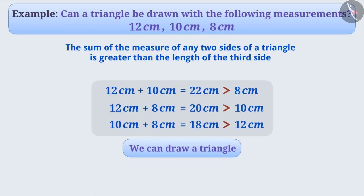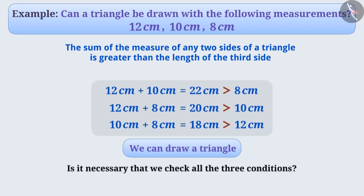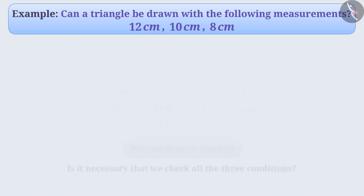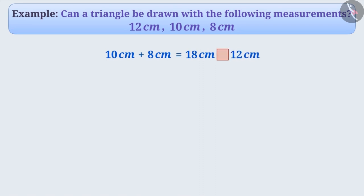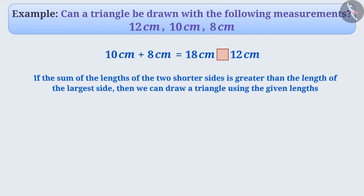Just think — to determine whether a triangle can or cannot be formed with the given lengths, is it necessary to check all three conditions? It's not necessary. If we add the lengths of the two shorter sides and compare it with the length of the largest side, we can find whether we will be able to form a triangle or not. If the sum of the lengths of the two shorter sides is greater than the length of the largest side, then we can form a triangle using the given measures.